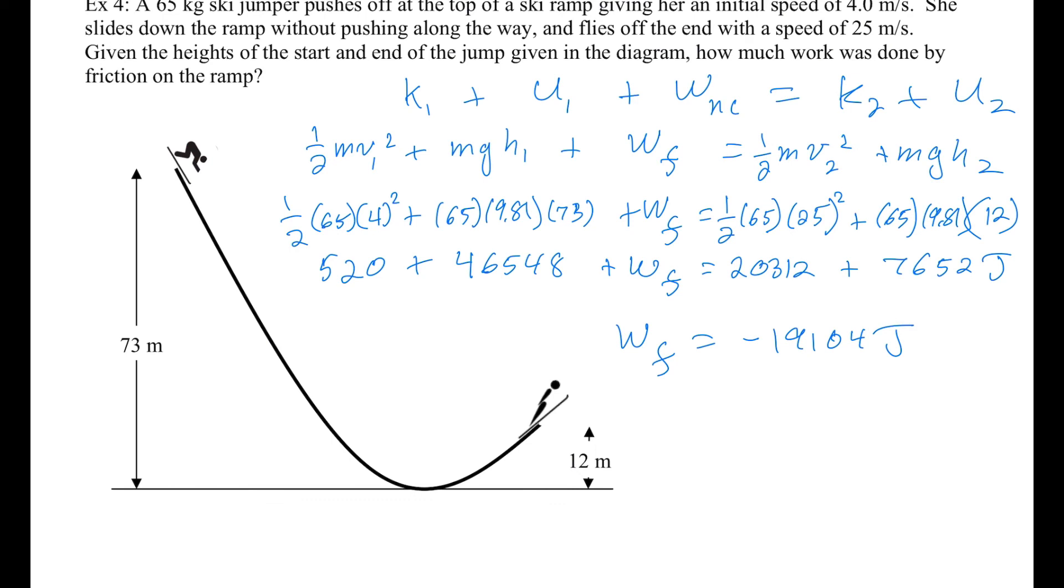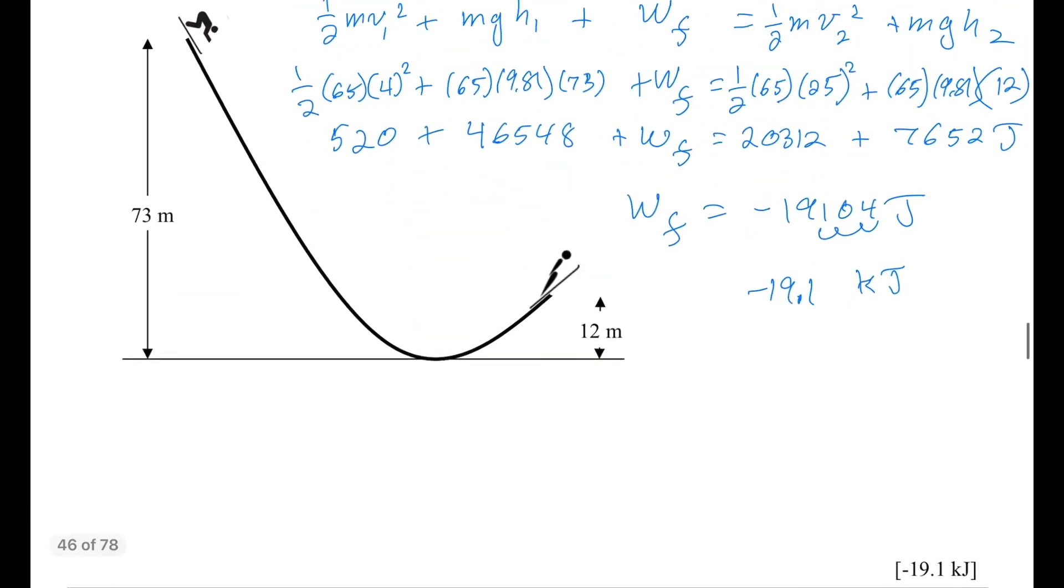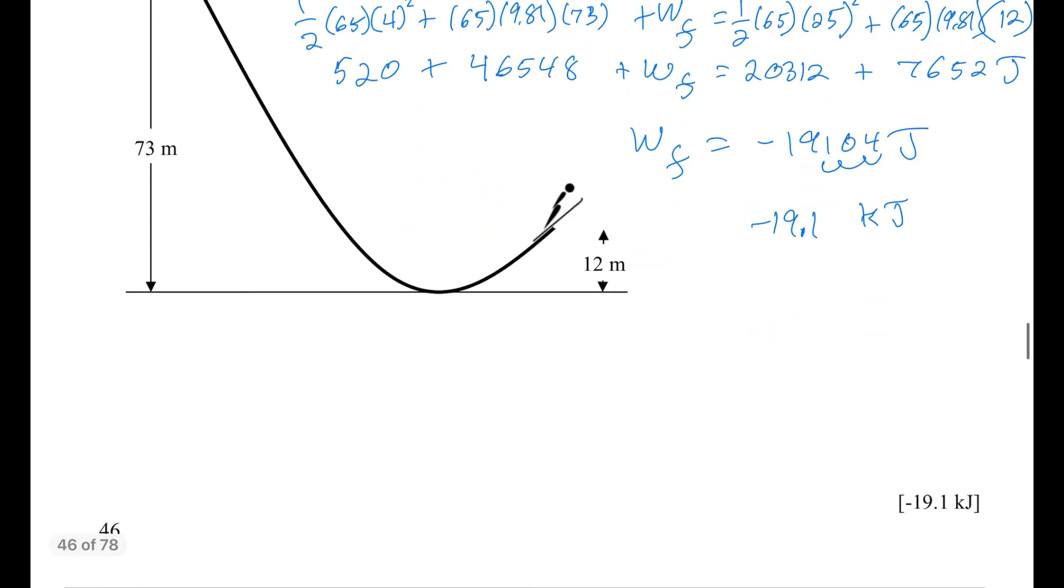Which is big and has a lot of sig figs, so let's just change that to kilojoules which means moving the decimal place back 3 and then we can keep negative 19.1 kilojoules, 3 sig figs is fine and that seems to be a good answer. Negative again because it did negative work, friction was working against the motion.